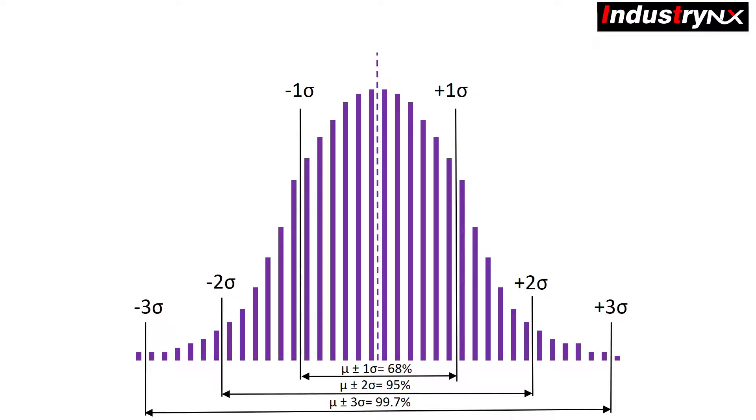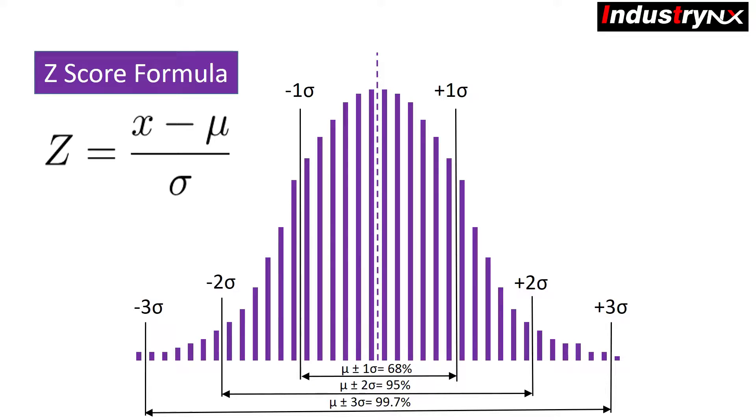Before we solve this problem we must get familiarized with z-score. A z-score is a numerical measurement used in statistics of a value's relationship to the mean, which is average of a group of values, measured in terms of standard deviation from the mean. Please note the shown formula to find z-score.